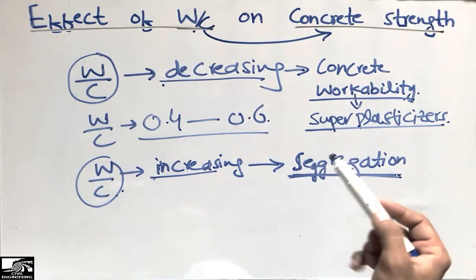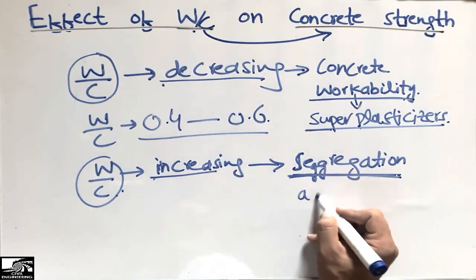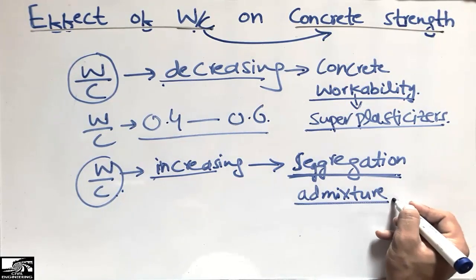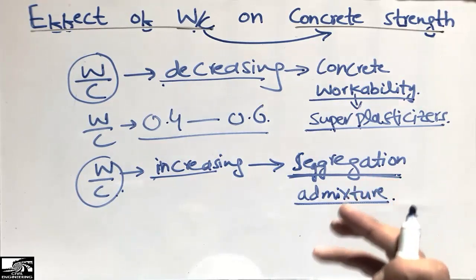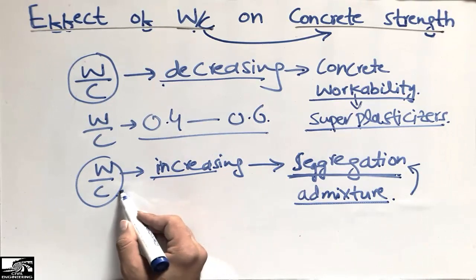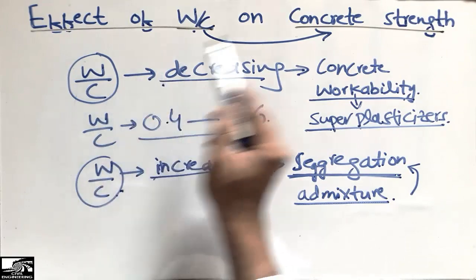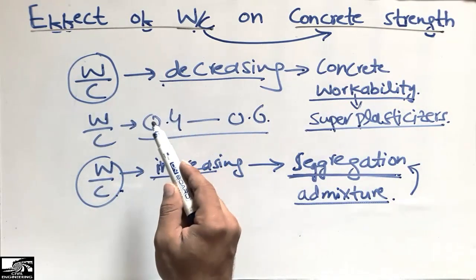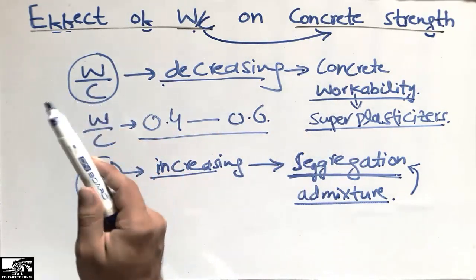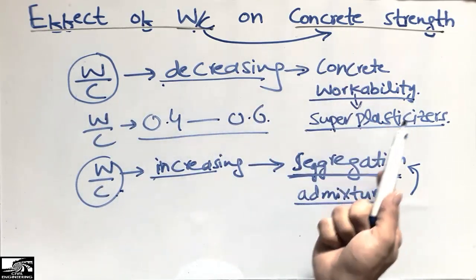When the water-cement ratio is increasing, it causes segregation and excess water in the concrete mix. We add admixtures depending on the type needed — to increase strength, reduce segregation, and maintain the strength of the concrete. The water-cement ratio plays a very important role in a concrete mix and should be well defined and well designed.